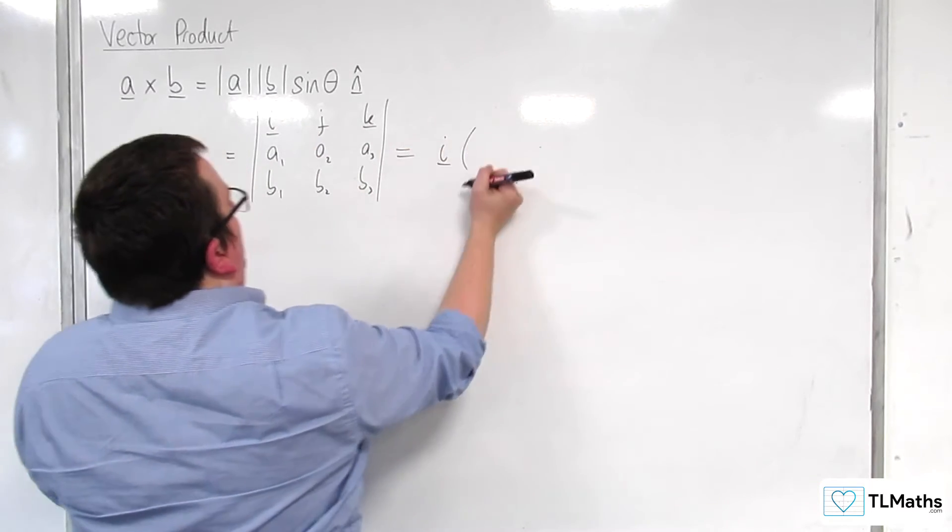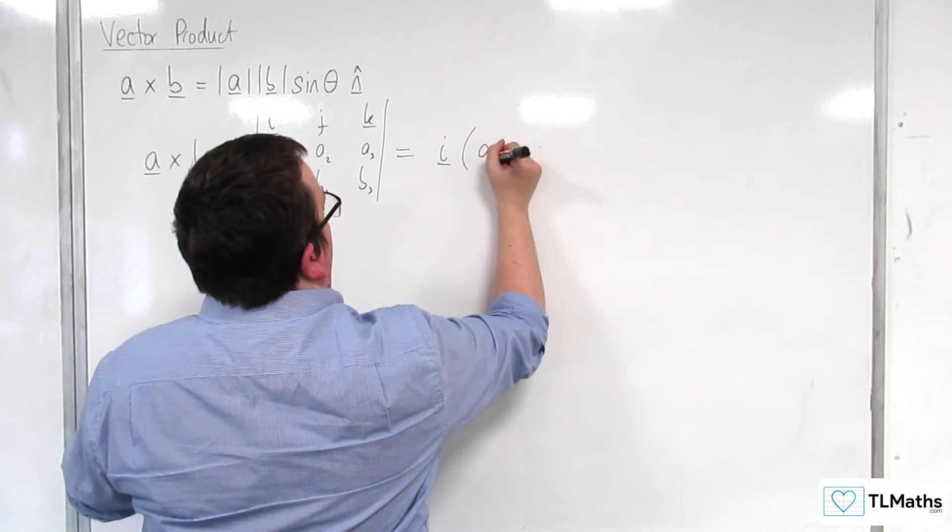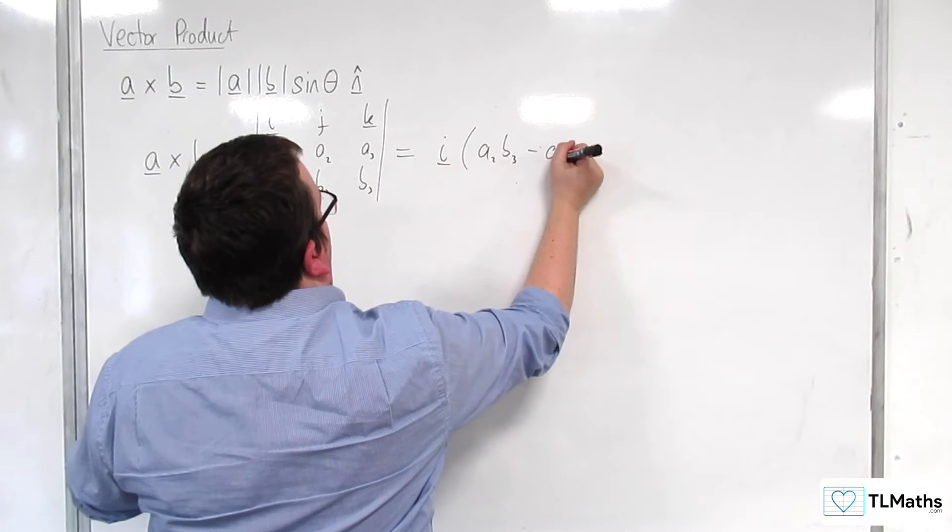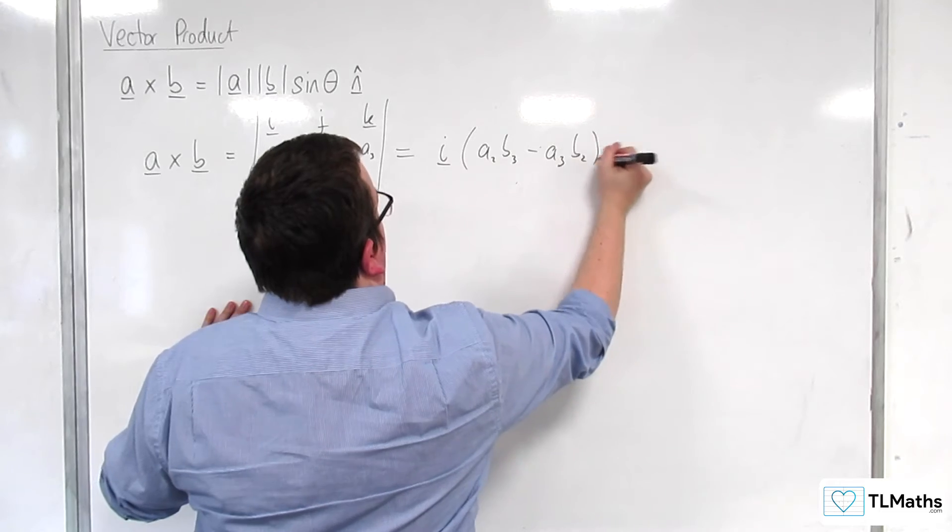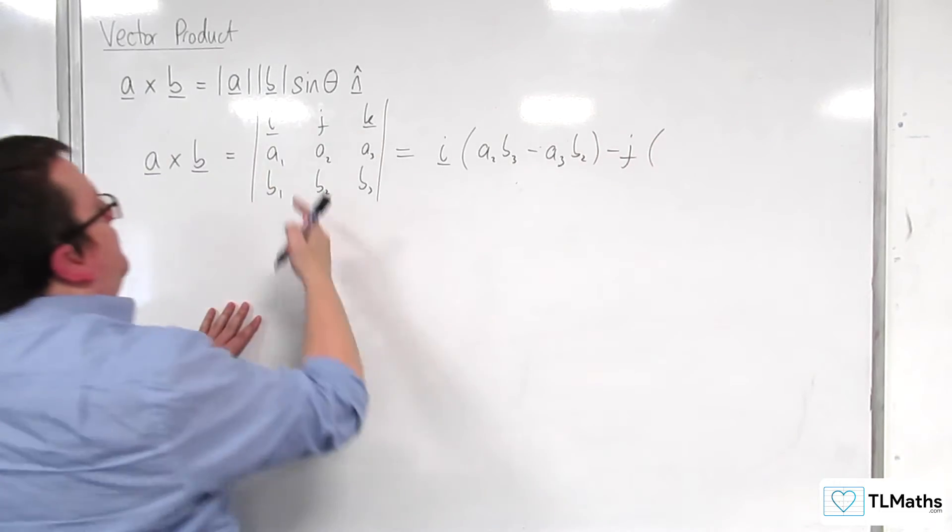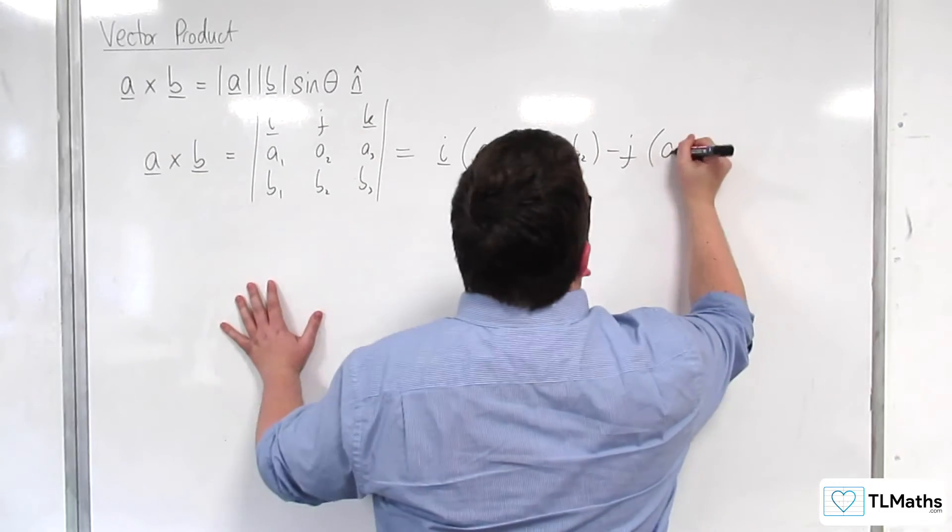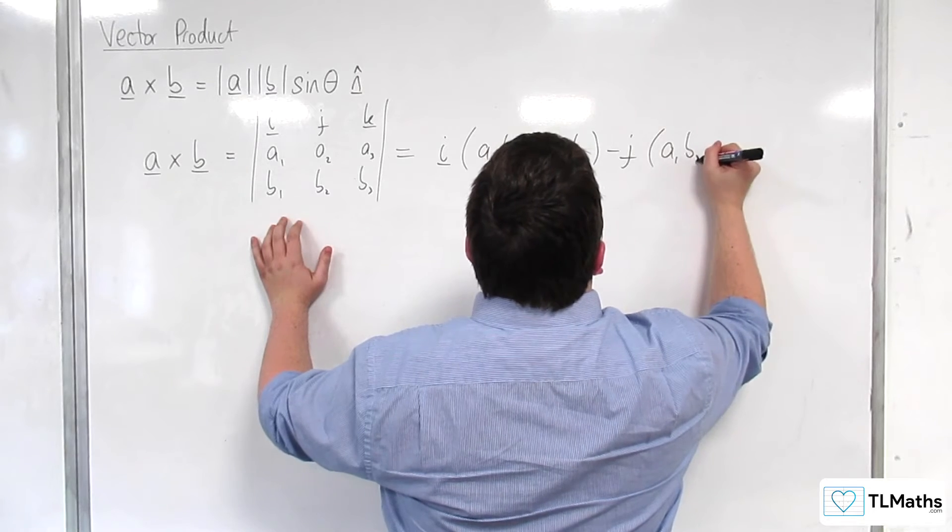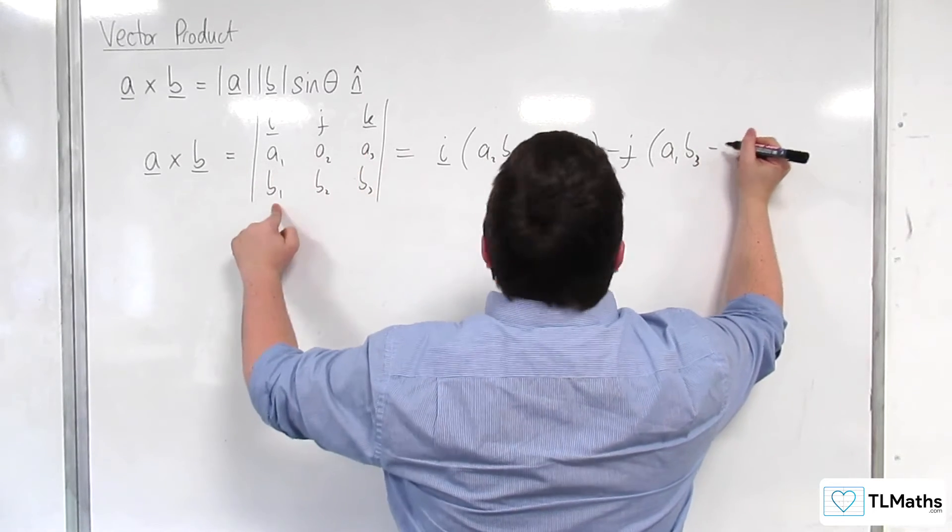and we've then got I times A2 B3 take away A3 B2, take away J times A1 B3, take away A3 B1,